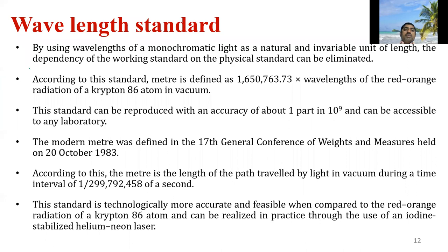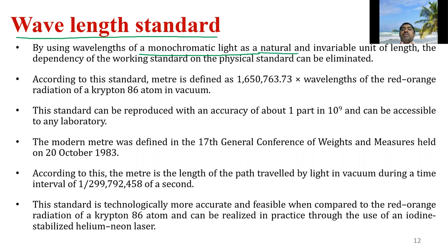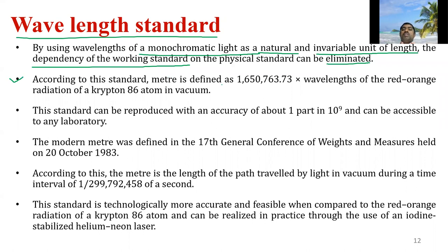Wavelength standards work on the principle of interferometry, using a monochromatic light source which is a natural and invariable unit of length. The dependency on working and physical standards can be eliminated. According to this standard, the meter is defined as 1,650,763.73 times the wavelength of the red-orange radiation of krypton-86 atom in vacuum. This standard can be reproduced with an accuracy of one part in 10^9 and is easily accessible to any laboratory.